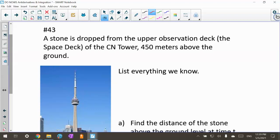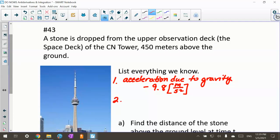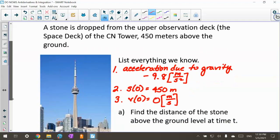Before we get started, we're going to list everything we know. We know acceleration due to gravity is negative 9.8 meters per second squared. We're dropping it from a distance of 450 meters, so s(0) equals 450 meters. They said they dropped it, so our initial velocity v(0) is 0 meters per second because we're just dropping it, not throwing it with any speed.